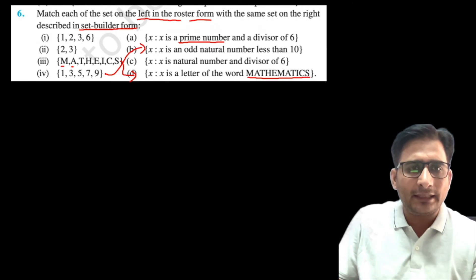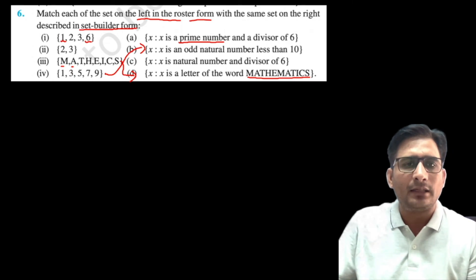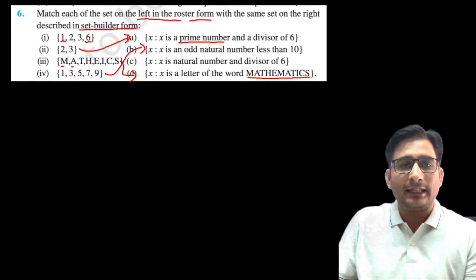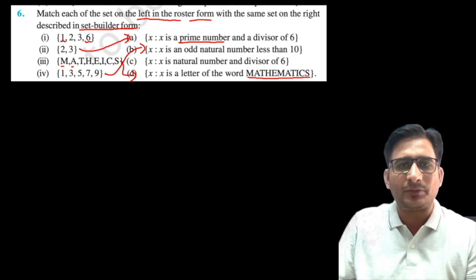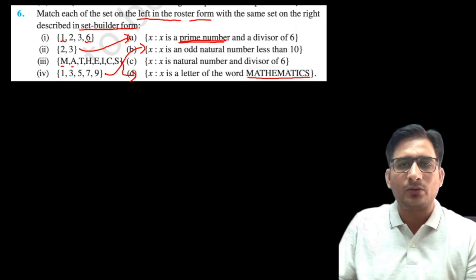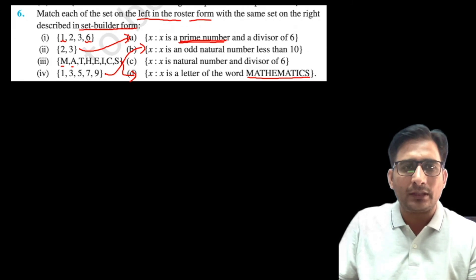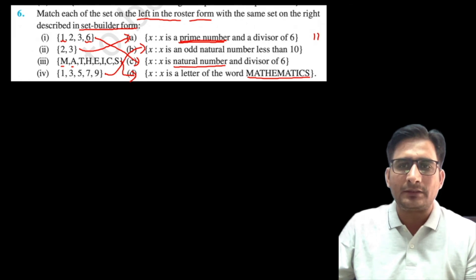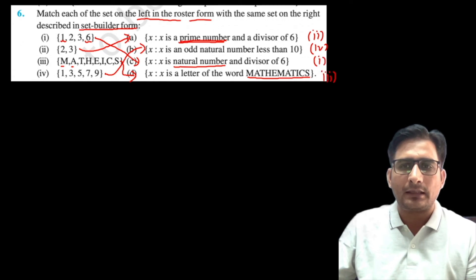For the set described as 'x is a prime number and divisor of 6': prime divisors of 6 are 2 and 3 (since 1 is not prime and 6 is not prime). One description says 'x is a natural number and divisor of 6' — divisors of 6 are 1, 2, 3, 6, so {1,2,3,6} matches that. Each set is matched accordingly. This completes Exercise 1.1, which is all about sets and their representation.